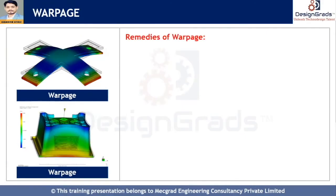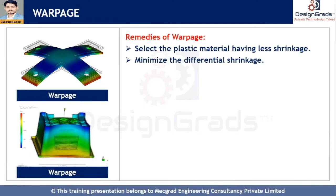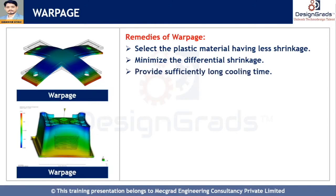Insufficient injection pressure and insufficient holding pressure also leads to warpage. The remedies for warpage: first, select a plastic material that is less likely to shrink. Second, minimize the differential shrinkage and ensure that cooling time is sufficiently long and slow enough to avoid the development of residual stresses being locked into the part.